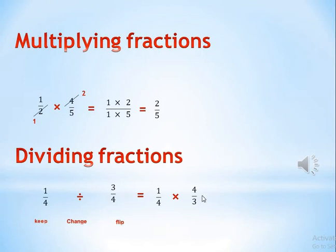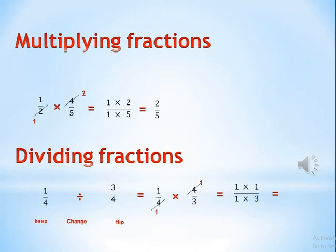Yes — we have 4 in the numerator and 4 in the denominator. So let's cross out and simplify 4 with 4 by dividing both by 4: both become 1. Then multiply numerators by each other and denominators by each other: 1 times 1 equals 1, and 1 times 3 equals 3. So the answer is 1 over 3.